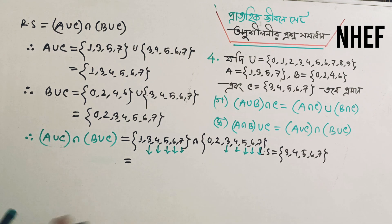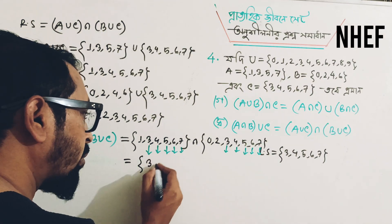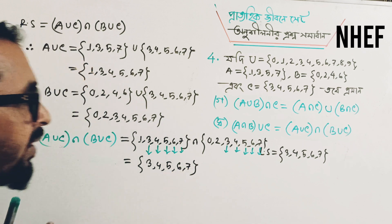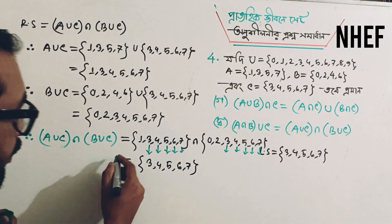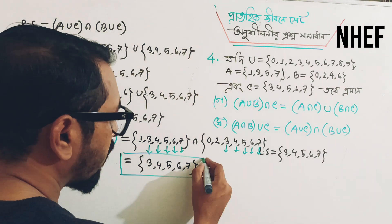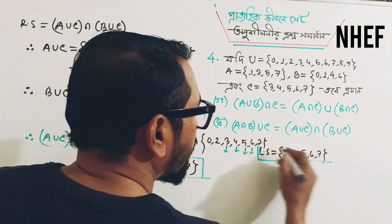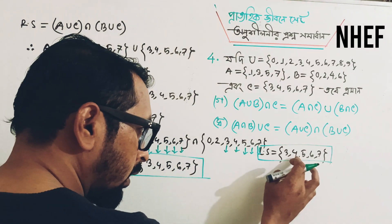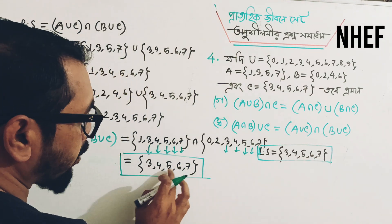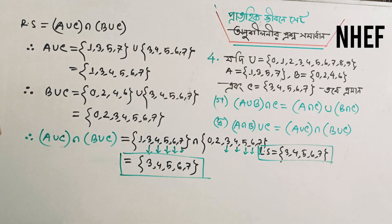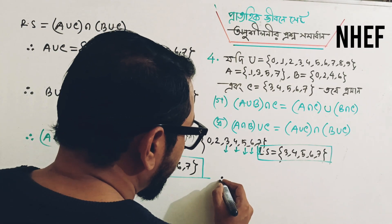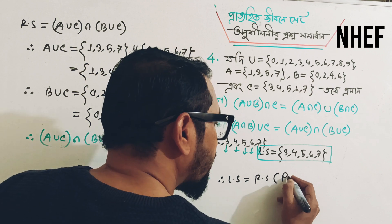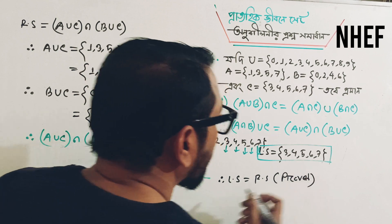Where you can see 3, 4, 5, 6, 7. As you can see, the left side and the right side of the left side is the same. The other thing goes 3, 4, 5, 6, 6. LS is equal to RS — proved.